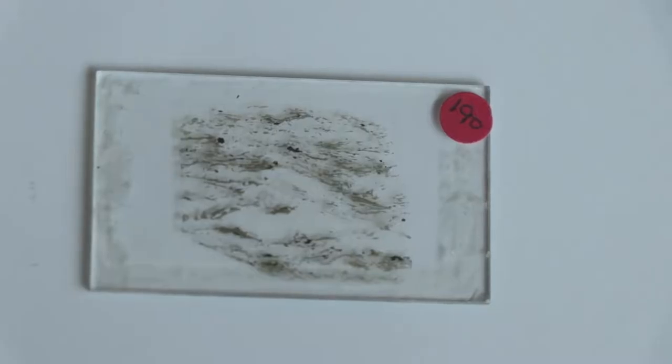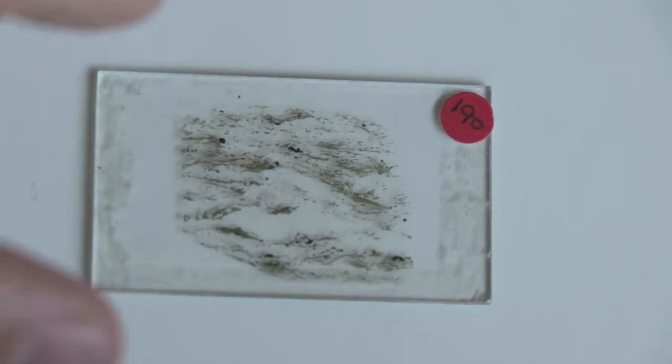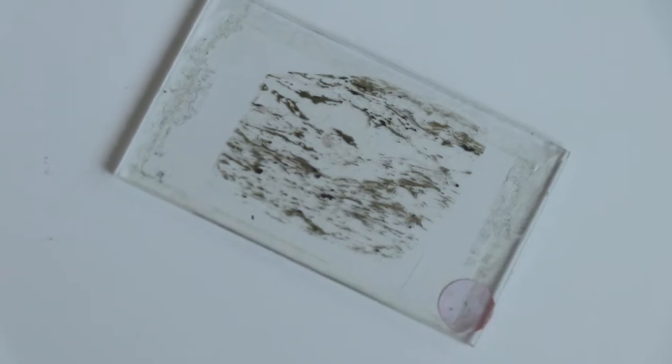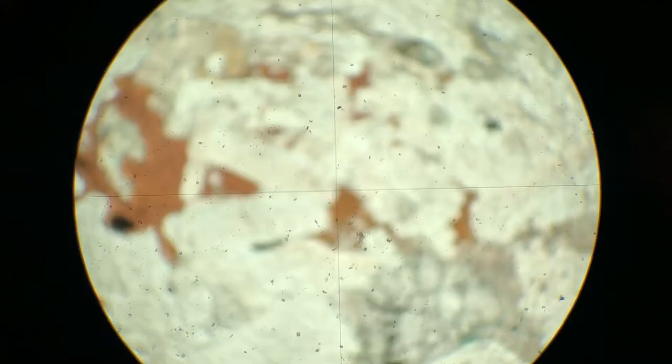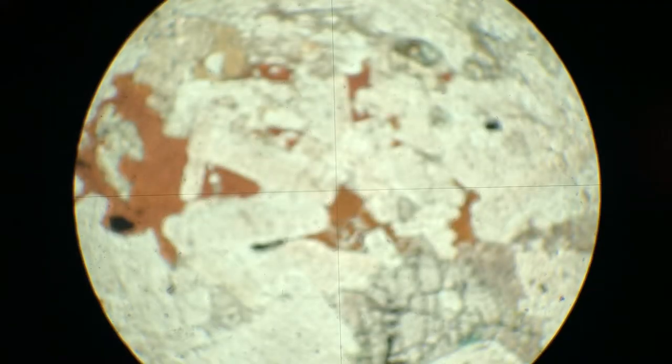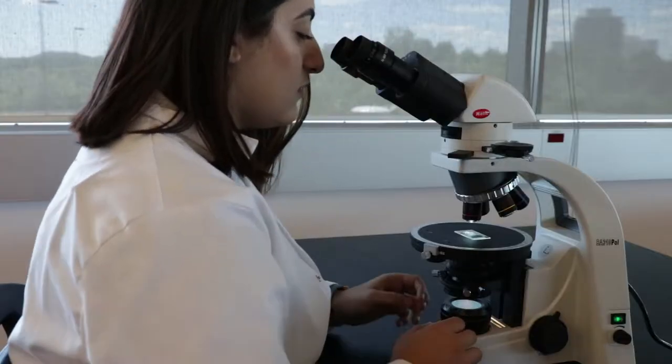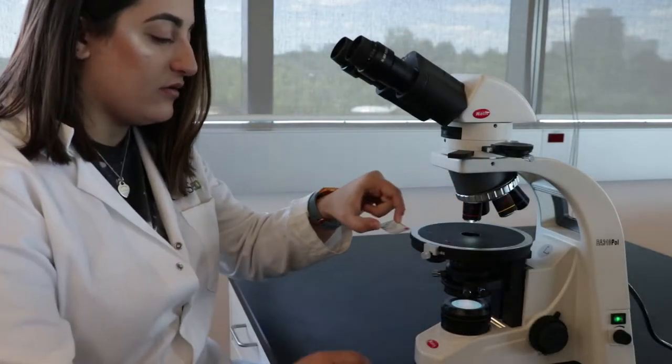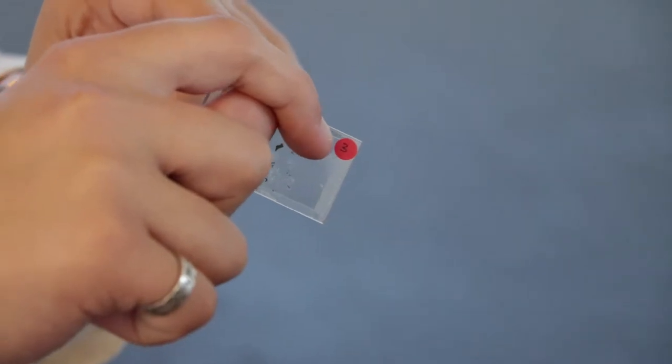Here are some problems you may encounter when doing thin section microscopy. Slides can only be viewed from one side. If the slide is the wrong way up, you won't be able to properly focus. To check which side of the rock thin section is up, find the edge of the rock slip by lightly feeling both sides of the slide.